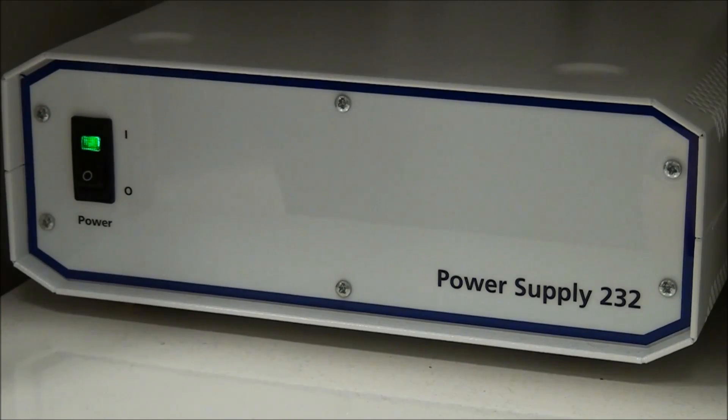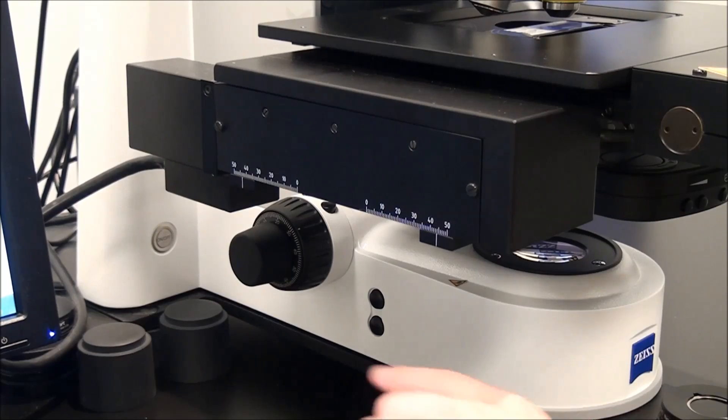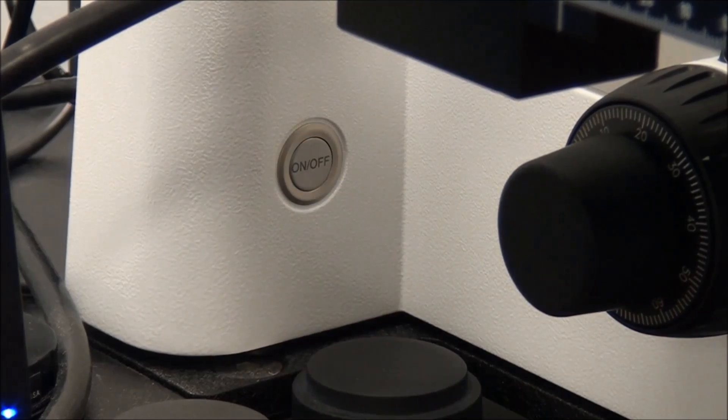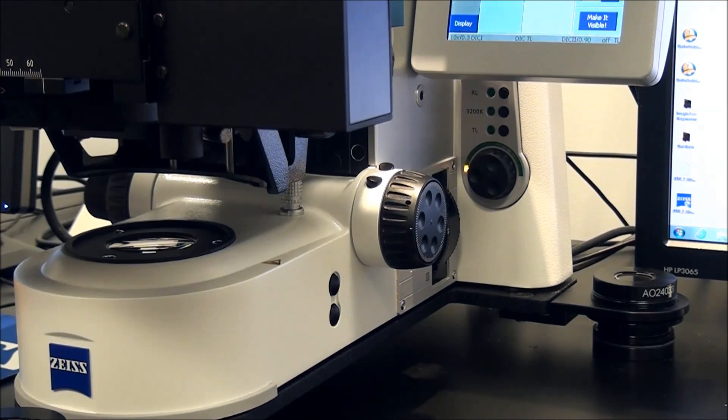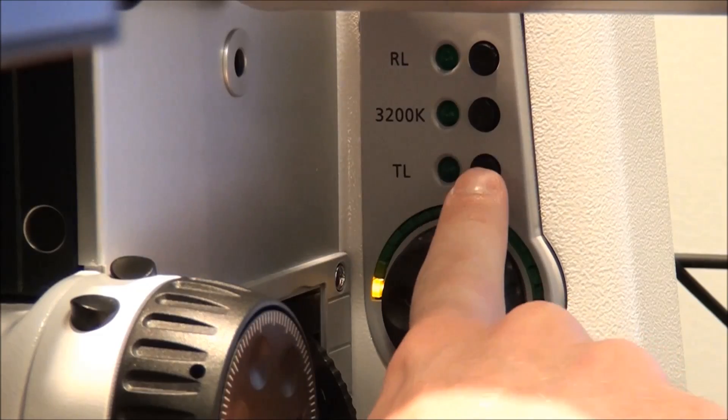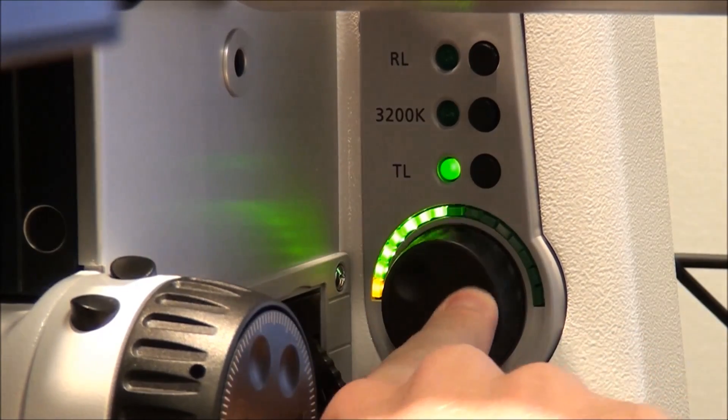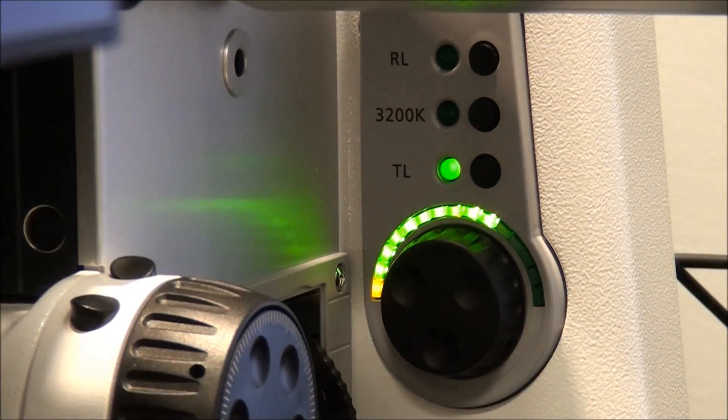Step 1: Switch on the imager via the power supply and power button. Step 2: Adjust the lamp brightness to a comfortable level by turning the rotary dial clockwise. If no light is reaching the sample, press the TL button if available.